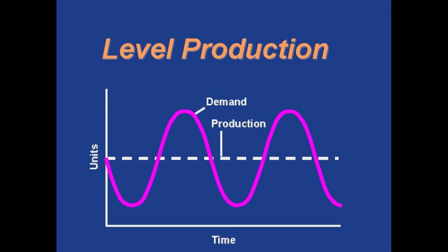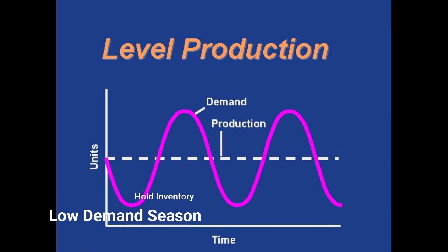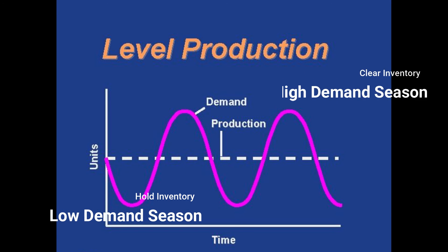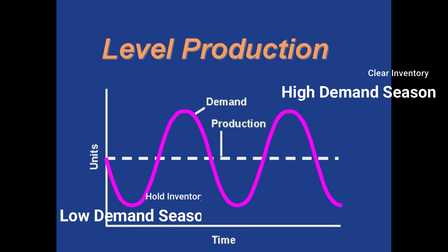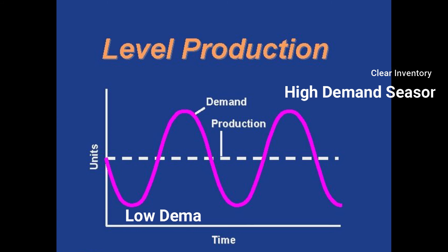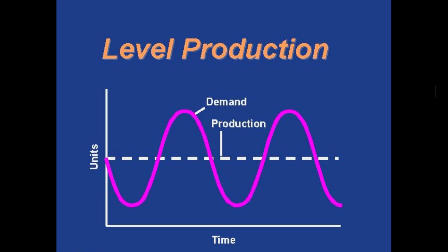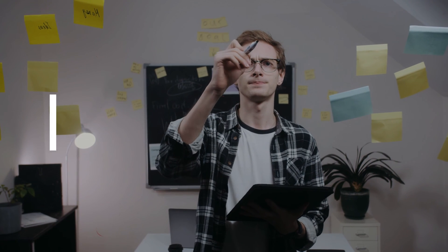The third is the level strategy, using inventory as the lever. Here we set production at a fixed rate and use inventory to absorb the variation in demand. We build and hold inventory in the low season and clear it out in the high season. This allows us to utilize high capacity, but it comes with additional inventory carrying costs carried from the low season to the high season period.